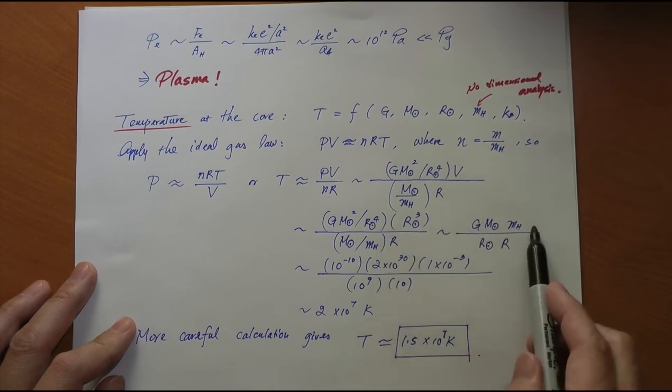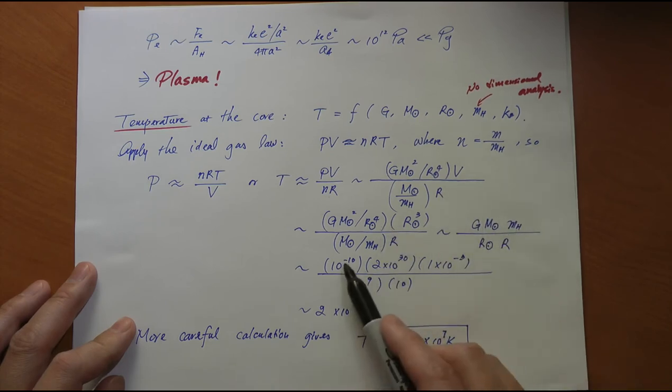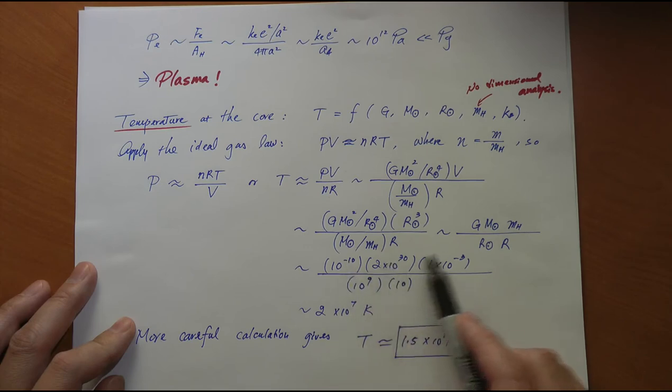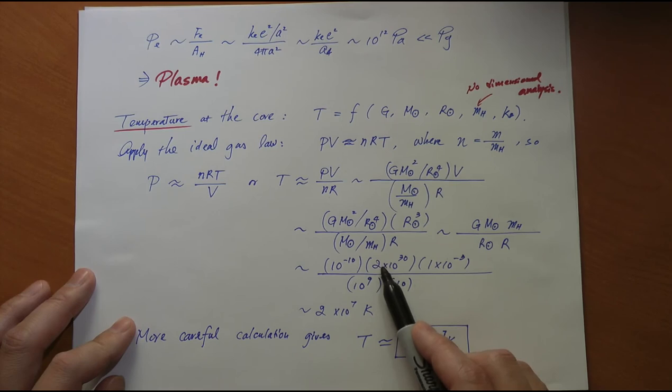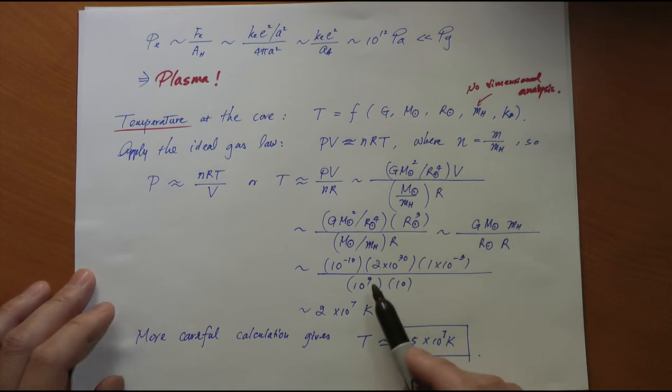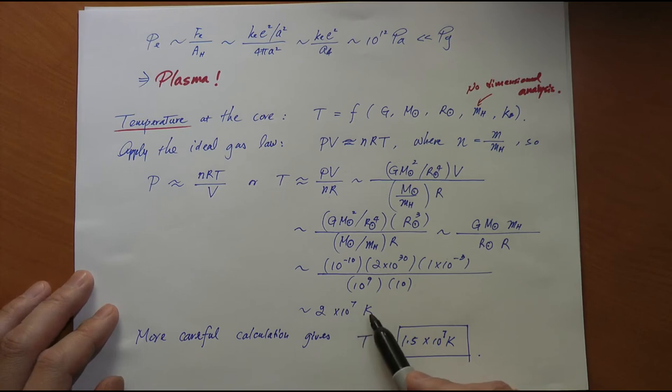So you do all this calculation. I have only kept the order of magnitude pretty much, except for that 2 here, which is from the mass of the sun. And you do this calculation, you find that you are looking at 2 times 10^7 Kelvin.